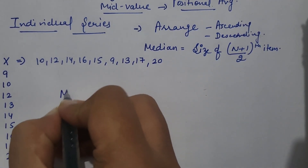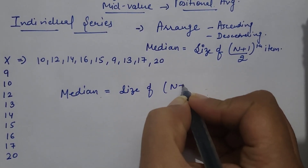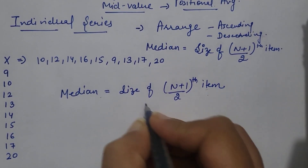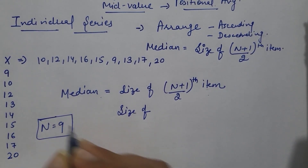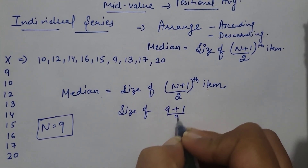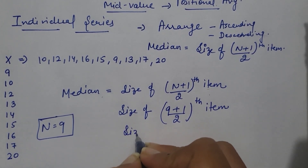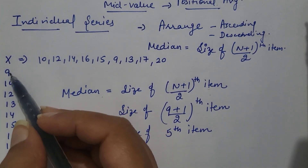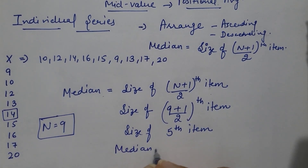After that, we have the formula to calculate median: size of N plus 1 by 2th item. Here N is equal to 9, as there are 9 observations. So 9 plus 1 by 2 gives us the size of the 5th item. Counting to the 5th item, which is 14 — so median here is 14.